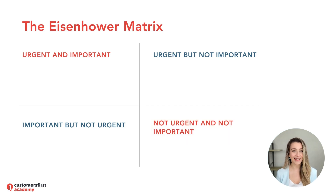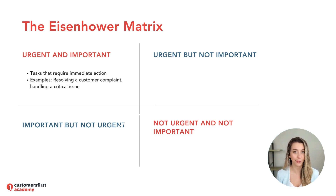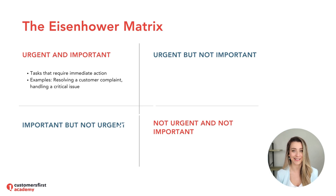I imagine you can guess where scrolling through social media would go. Let's talk about each one in more detail. First we have urgent and important — this is top priority. These are tasks that require immediate action because they're both urgent and important. For example, a customer complaint that needs immediate resolution would fall into this category.